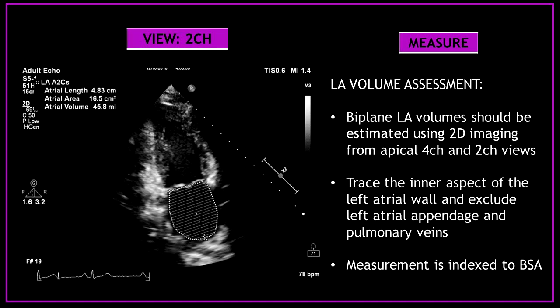Now continue and perform a left atrial volume assessment. Left atrial volumes should be estimated using 2D imaging from apical 4 chamber and 2 chamber views. Trace the inner aspect of the left atrial wall and exclude the left atrial appendage and pulmonary veins. All measurements need to be indexed to body surface area.